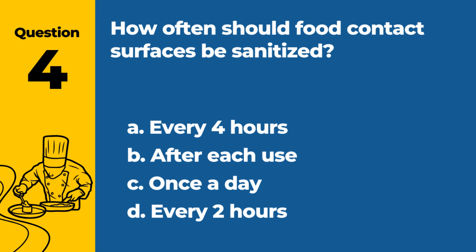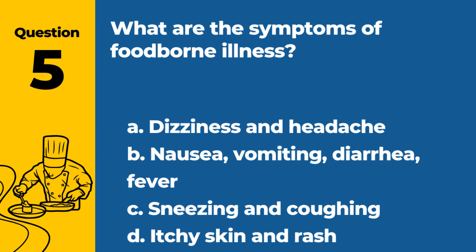Question 4. How often should food contact surfaces be sanitized? a. Every 4 hours. b. After each use. c. Once a day. d. Every 2 hours. Answer: b. After each use. Food contact surfaces should be sanitized after each use to prevent cross-contamination.